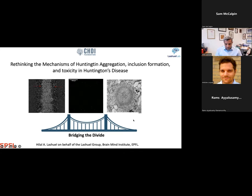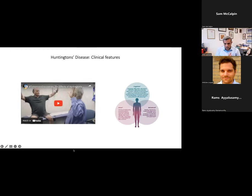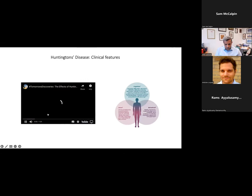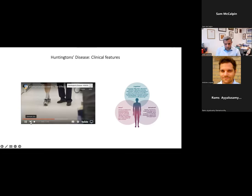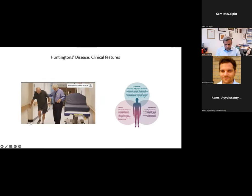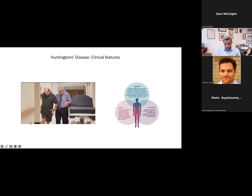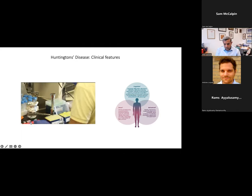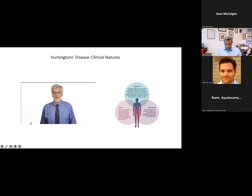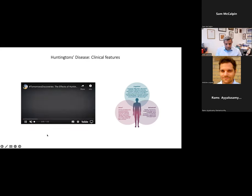I'd like to start by introducing Huntington disease. It's a neurodegenerative disorder that is caused by death of neurons in the brain. This usually manifests as a complex subset of both motor, behavioral, and cognitive symptoms, the most obvious of which is the motor system symptoms — difficulty in controlling movement. This is a video of our colleague Chris Ross showing one of the Huntington patients. Huntington is not a disease about motor symptoms alone; it has many motor, behavioral, and cognitive manifestations.